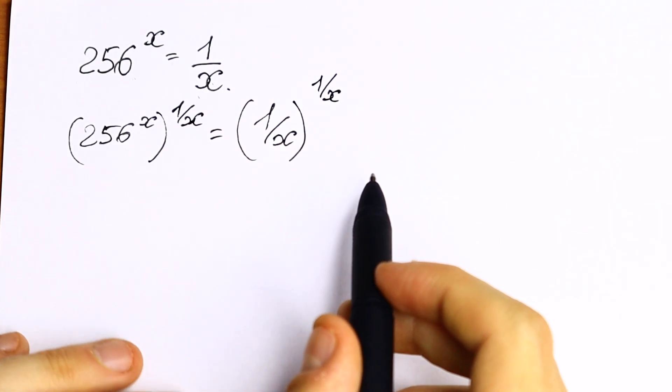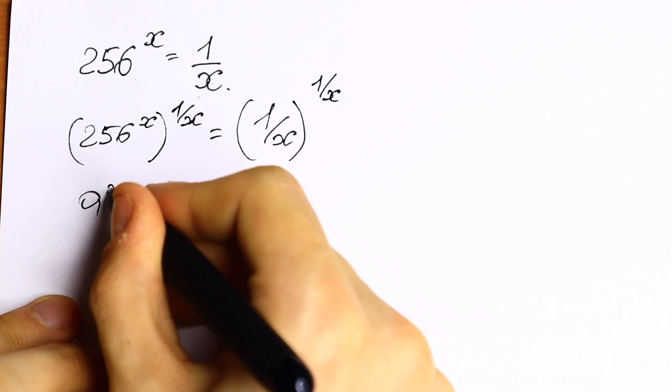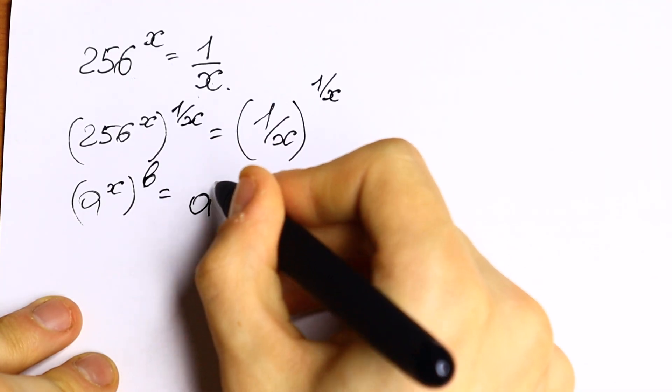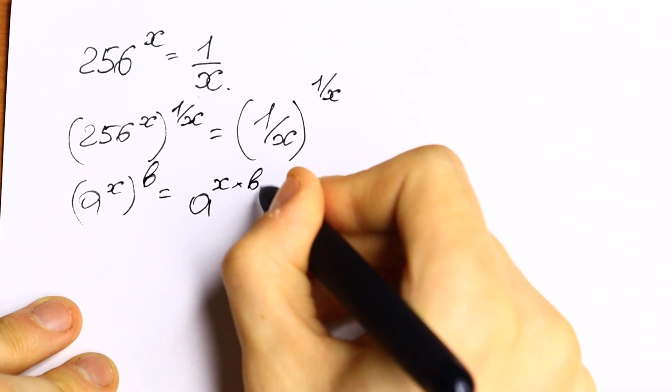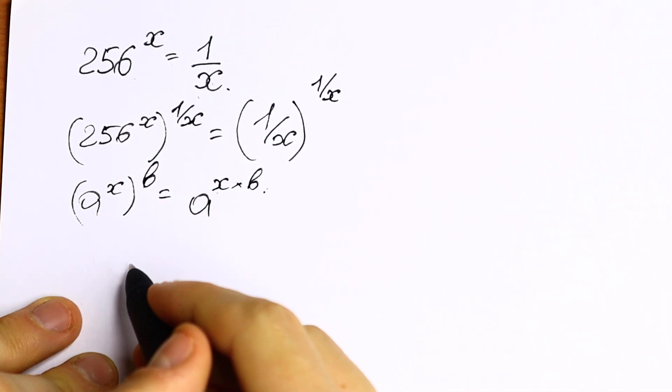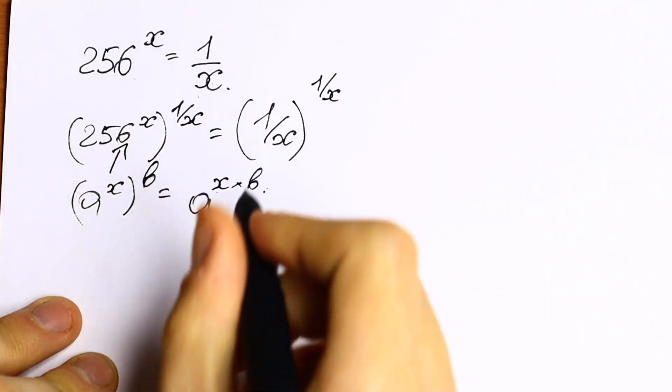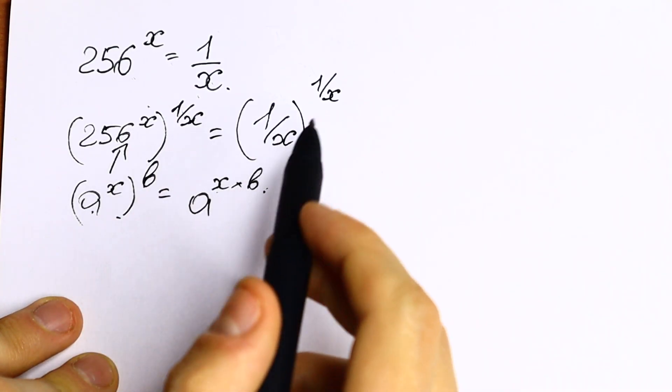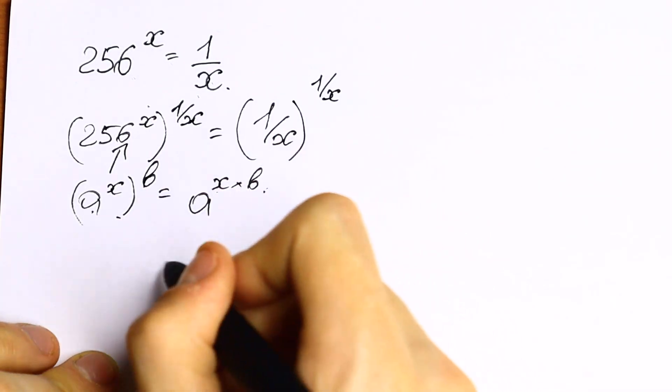What are we going to do next? Take a look. We have right here a situation like a to the power x raised to the power b. So this will be equal to a to the power x times b. So we just multiply our powers. And we need to use this rule right here because we have the same situation. We have x equal to x, b equal to 1 over x, and we need to multiply our powers.